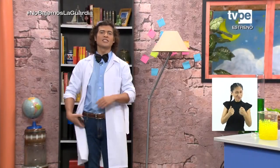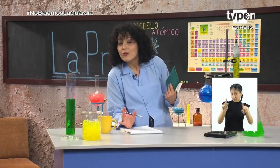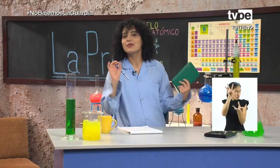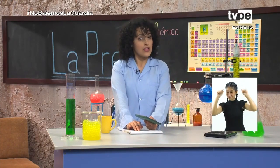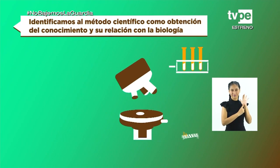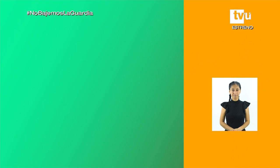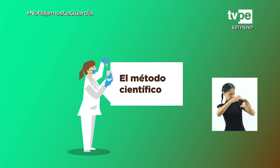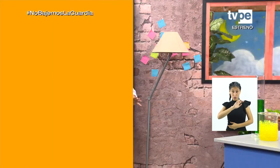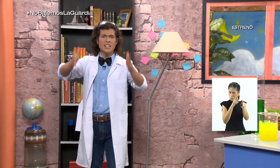Estupendo, Majo. Creo que las chicas y los chicos ya lo comprendieron. No está de más un repaso por si alguien se quedó con la duda. El tema de hoy es el método científico como obtención del conocimiento y su relación con la biología. Dijimos que para crear conocimientos científicos es necesario seguir el camino de los investigadores para resolver problemas: ese camino es el método científico, cuyos pasos son la observación, la formulación de hipótesis, la experimentación, y las conclusiones y resultados.